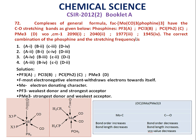Therefore, the tricarbonyl-trimethylphosphine-molybdenum complex should have the least CO stretching frequency value, that is 1945 cm⁻¹. So D ligand corresponds to 1945 cm⁻¹. Checking the options, option 1 has D with the least value of 1945. So the correct answer is option 1.